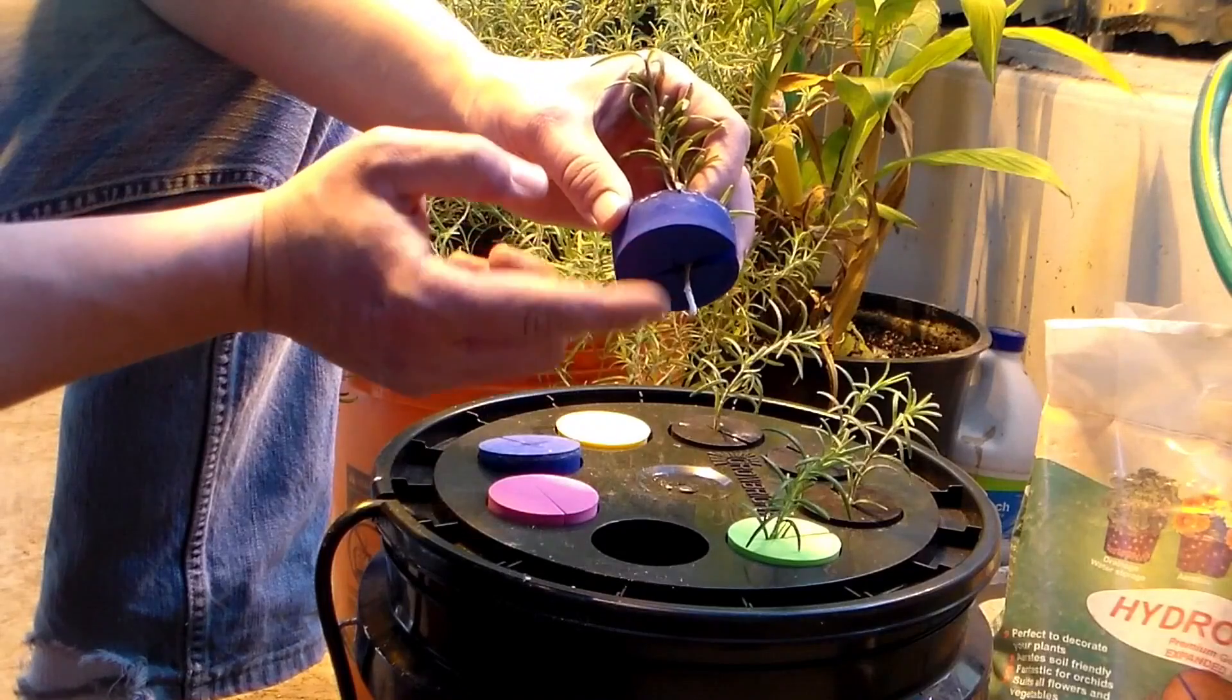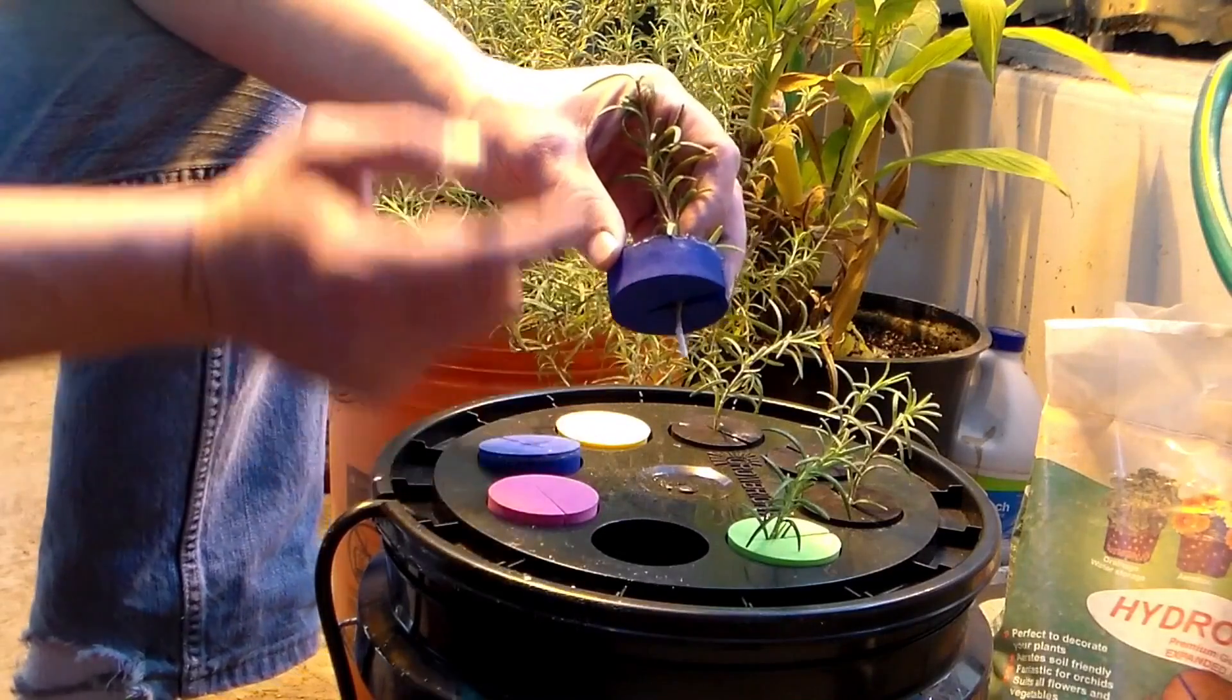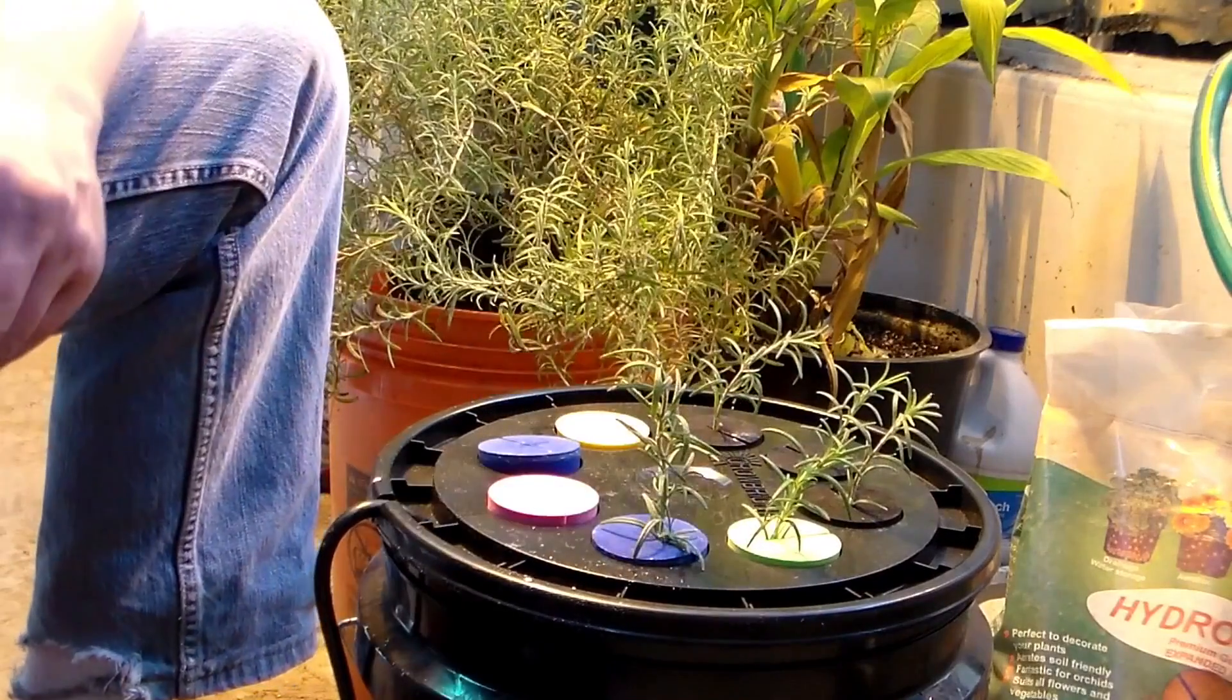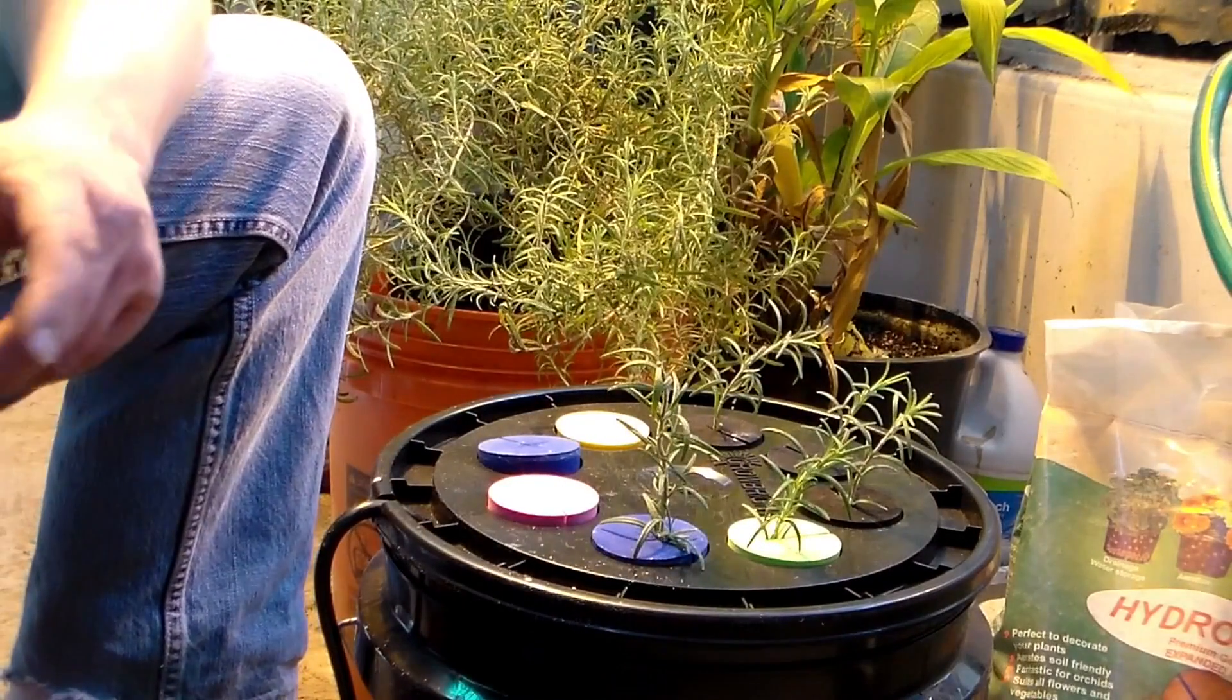Make sure that the part where you cut the leaves off is below here. That's what's going to get wet and that's where the roots are going to come from. Simply put it into the bucket like that and in two weeks you should have some roots.